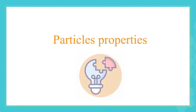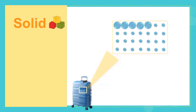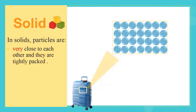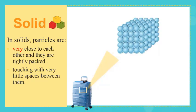Now we will discover the properties of particles in each state of matter. Let's start with solids. By taking a closer look at the particles of solids, we notice that they are arranged regularly and tightly, one next to the other, with very small empty spaces between them. So in solids, particles are very close to each other and tightly packed, touching with very little space between them. Because the particles of solid are very close to each other, we say that they are regularly arranged.